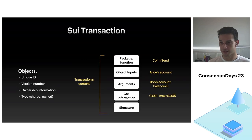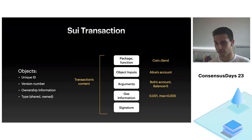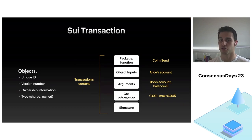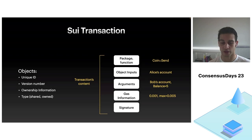The transaction structure is quite typical: a package defining the function you want to execute, a bunch of input objects you wish to mutate, arguments and gas information, and then a signature over the entire fields. Nothing special — it's quite classic.